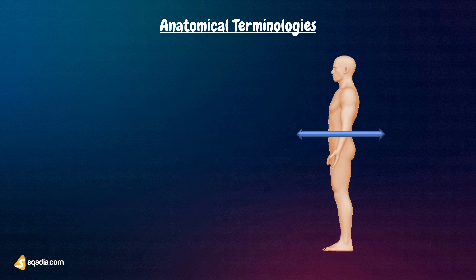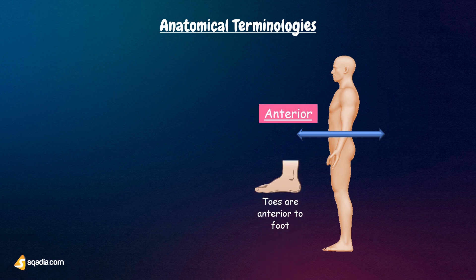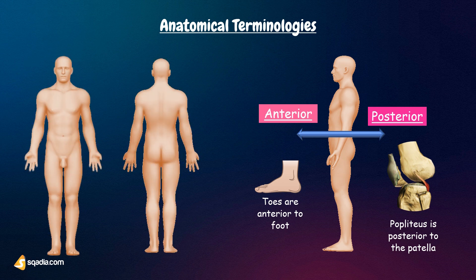Anterior or ventral means in front of or frontal aspect. For example, the toes are anterior to the foot. Posterior or dorsal means behind, or direction towards the back of the body. For example, the popliteus is posterior to the patella.